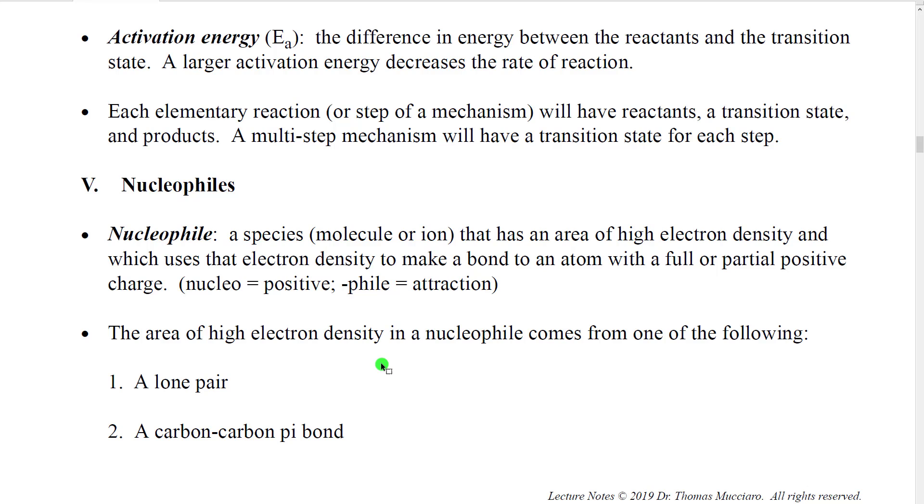In general, we're going to see two different ways that nucleophiles have high electron density. They can either have lone pairs and use that to make a bond, or carbon-carbon pi bonds can be used to make a bond. We're going to see examples of both of these.